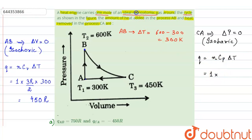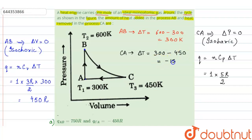For an ideal monoatomic gas, Cp equals 5R/2. For the CA process, at C the temperature is 450 K and the final temperature at A is 300 K, so delta T equals 300 minus 450 equals minus 150 K. Therefore, the heat exchange equals 1 × (5R/2) × (−150) = −375R. The negative sign means heat is removed in process CA.